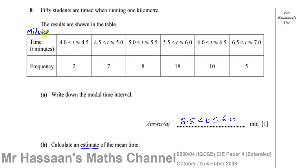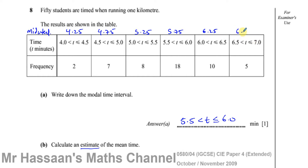To find the mid-interval, take the beginning and end of the group, add them together and divide by 2. For 4 to 4.5, that gives 4.25. Between 4.5 and 5 is 4.75. Between 5 and 5.5 is 5.25. Between 5.5 and 6 is 5.75. Between 6 and 6.5 is 6.25. And between 6.5 and 7 is 6.75. Those are the mid-interval values.